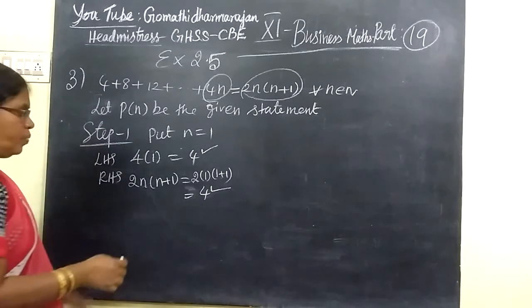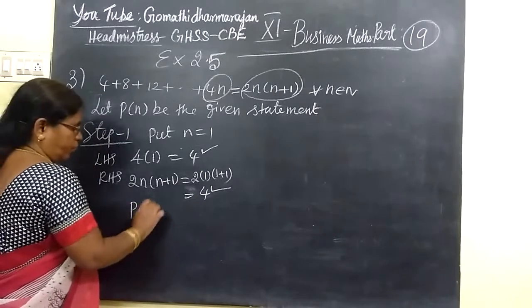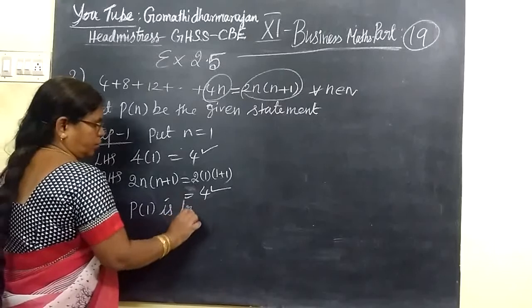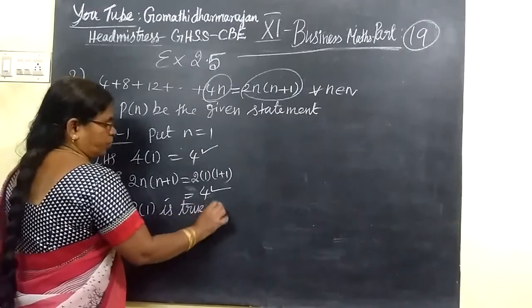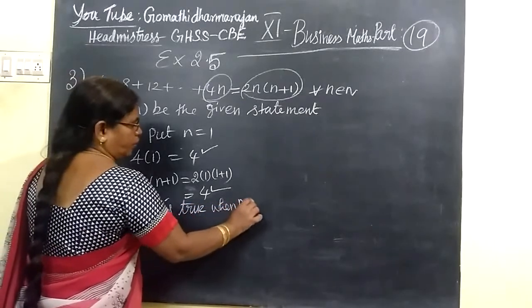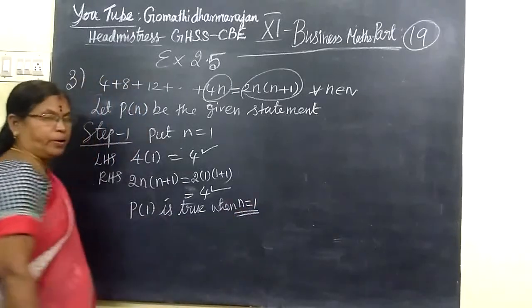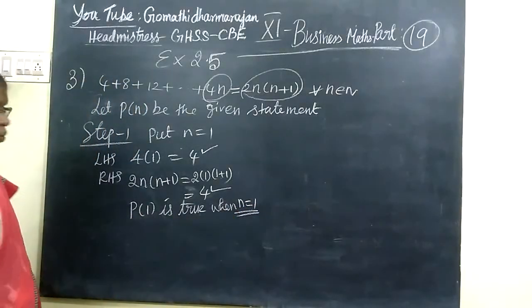LHS and RHS are the same. P of 1 is true when N equal to 1. Again, because we have 1 and then 2, now come to step 2.